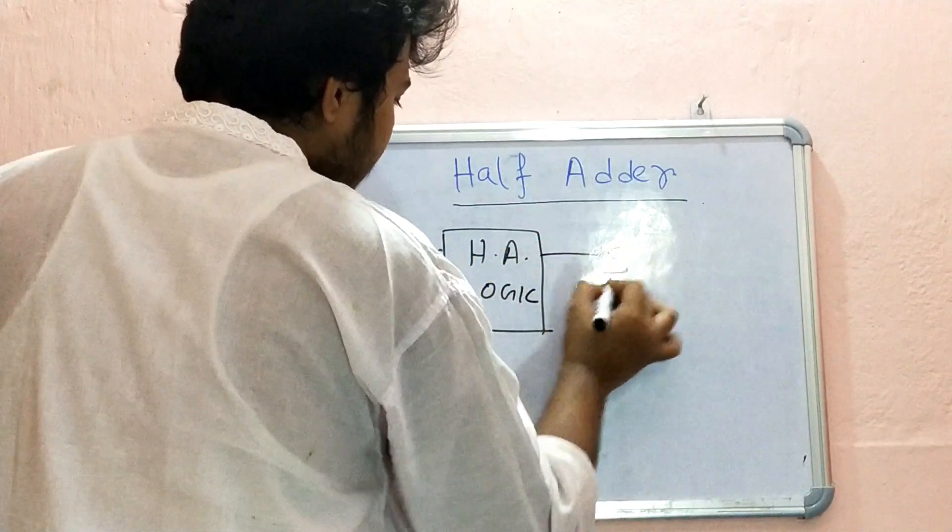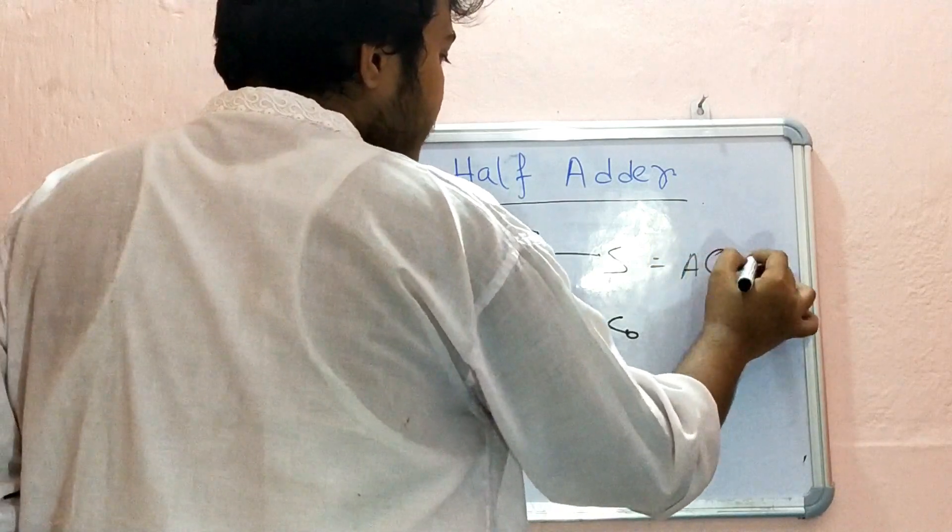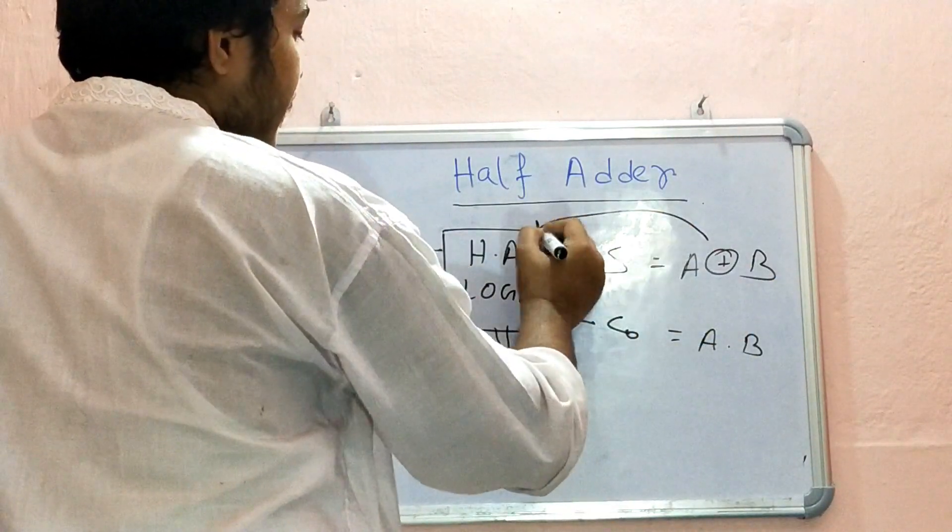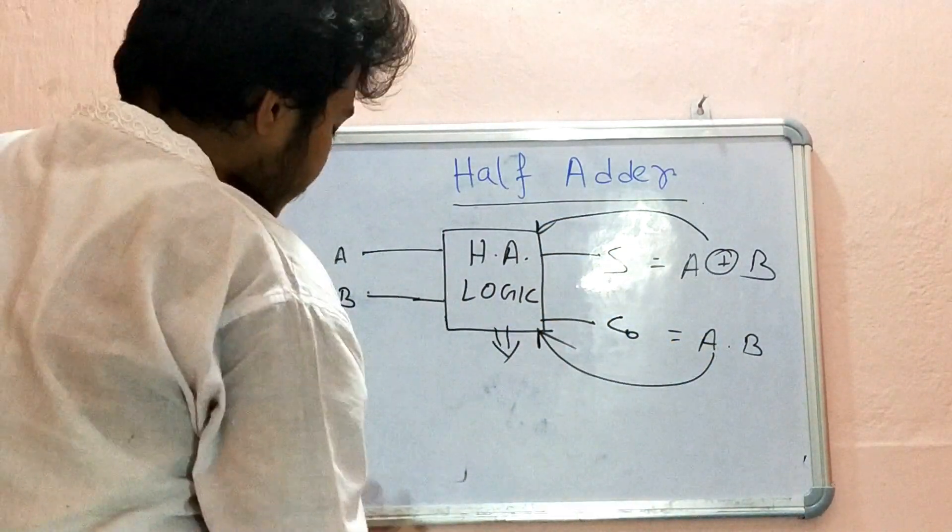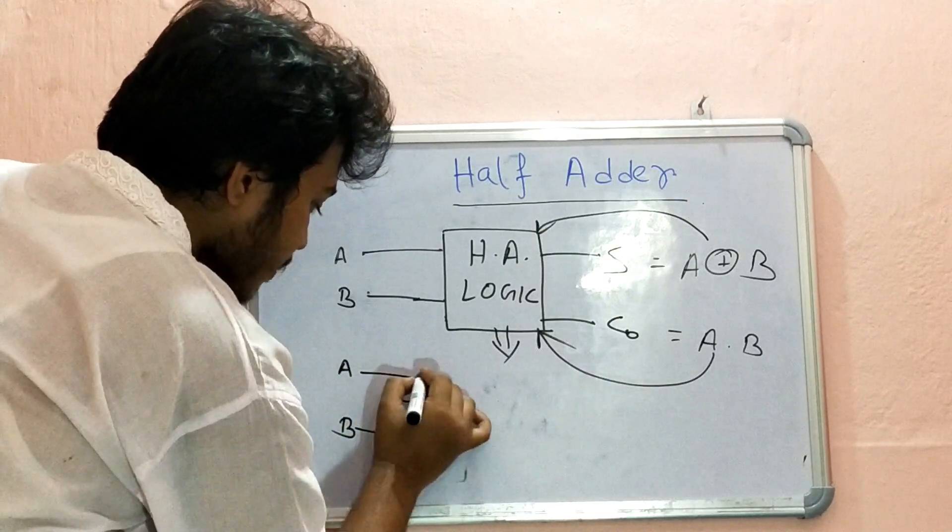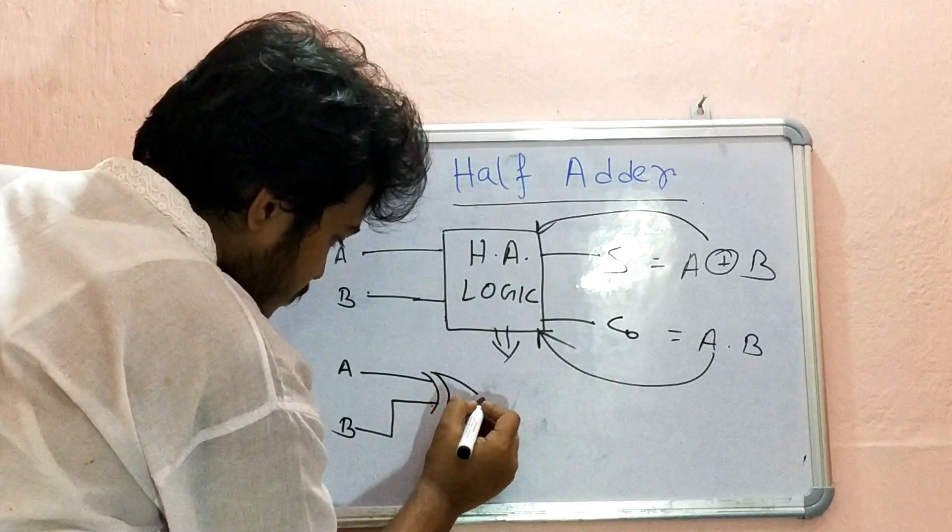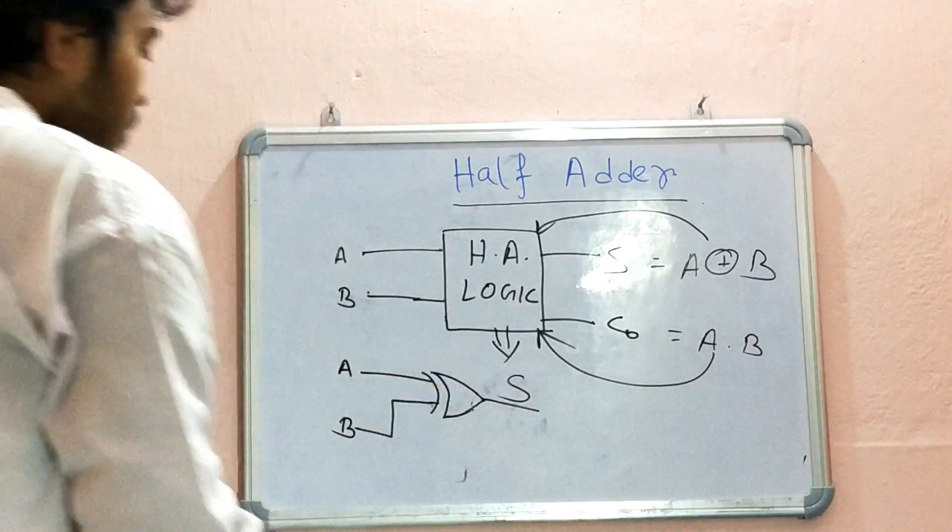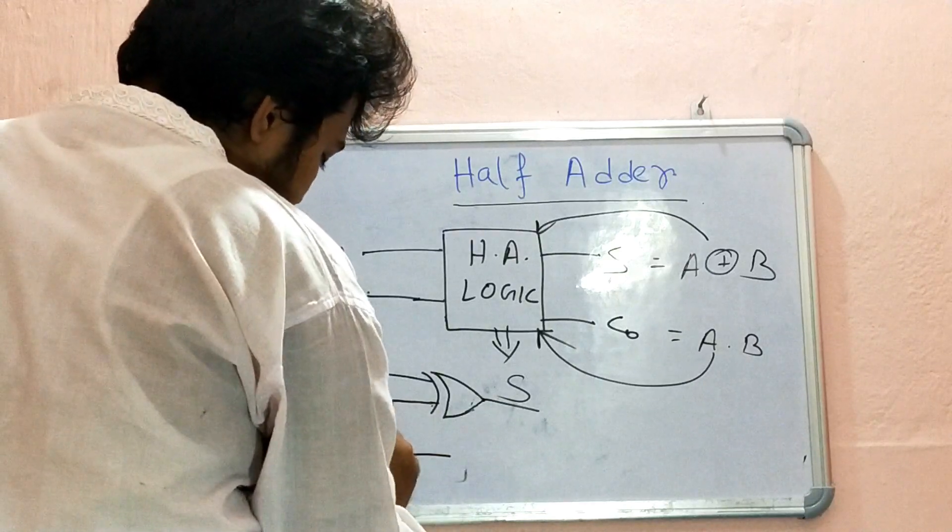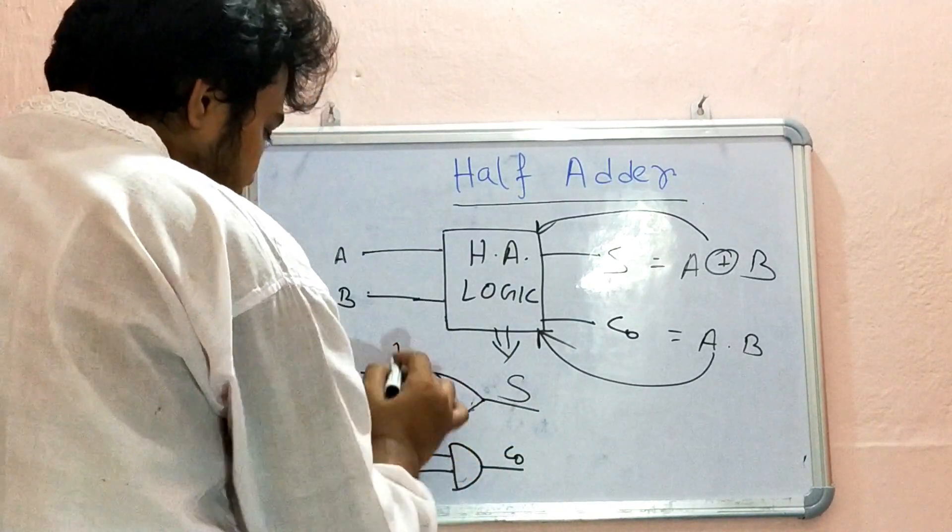Here is the half adder logic, from which comes sum and carry out. What expression did we get for sum? A XOR B. And for this, A AND B. So at this place we have to implement this logic. In order to do that, simply write A and B, then its XOR combination. So this is our sum. Now what is carry? A and B. So from here we take A, from here B, give an AND gate here. After that, this is our carry out. So this is our half adder logic with AND gate and XOR gate.